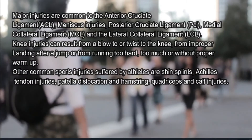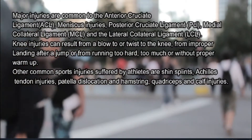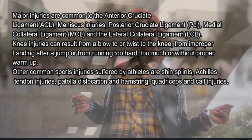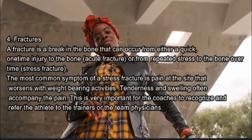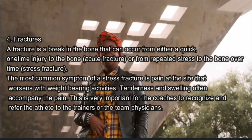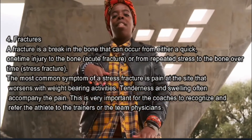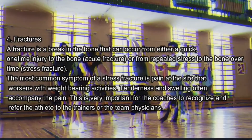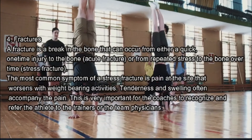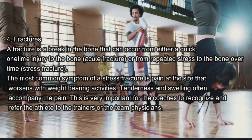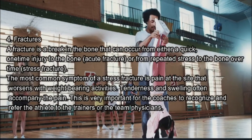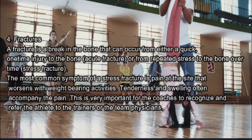Other common sports injuries suffered by athletes are shin splints, Achilles tendon injuries, patellar dislocation, and hamstring, quadriceps, and calf injuries. Number four: Fractures. A fracture is a break in the bone that can occur from either a quick one-time injury (acute fracture) or from repeated stress on the bone over time (stress fracture). The most common symptom of a stress fracture is pain at the site that worsens with weight-bearing activities. Tenderness and swelling often accompany the pain. It is very important for coaches to recognize this and refer the athlete to trainers or team physicians.